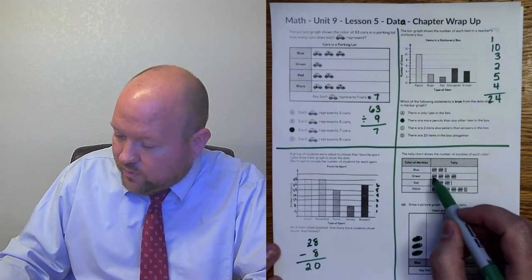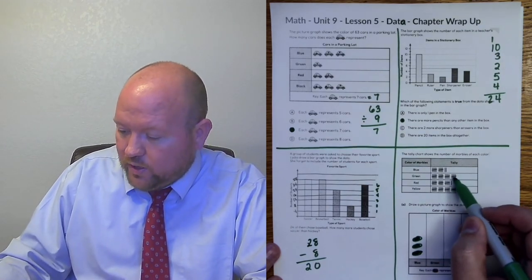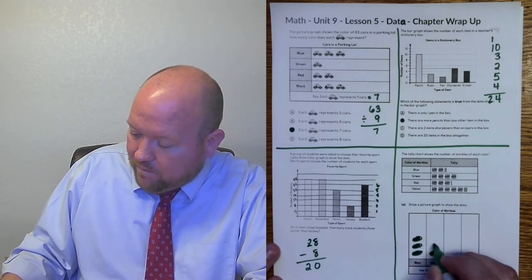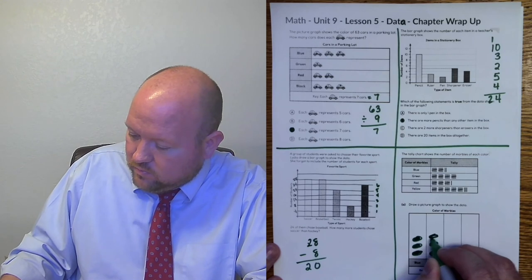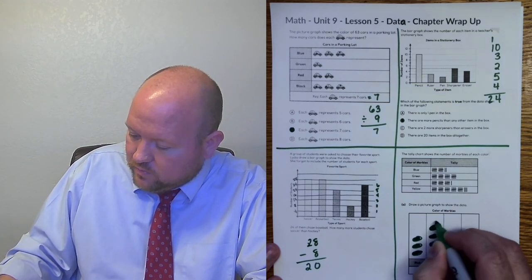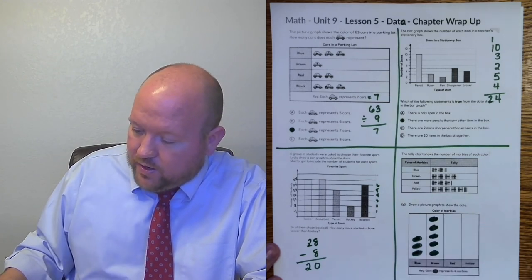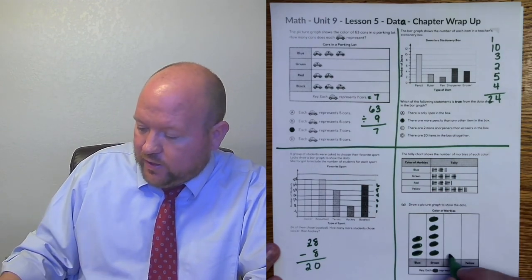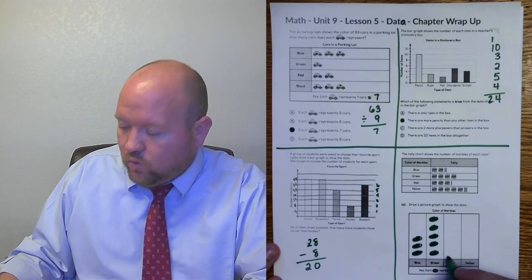Here there is five, 10, 15, 20, 20 divided by four is five. Next for red, five, 10, 15, 16. So 16 divided by four is four.